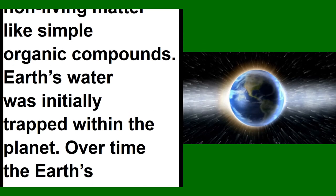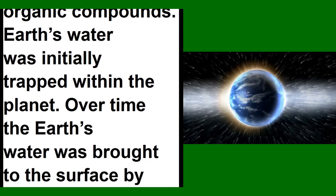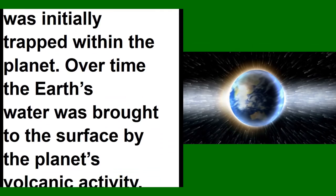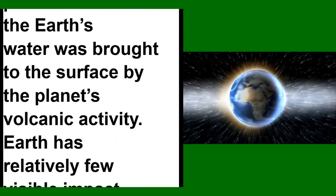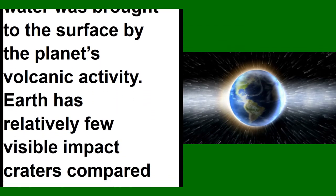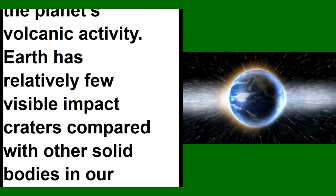Earth has relatively few visible impact craters compared with other solid bodies in our solar system. This is because Earth is geologically active and has processes like tectonics and erosion that reshape its surface.